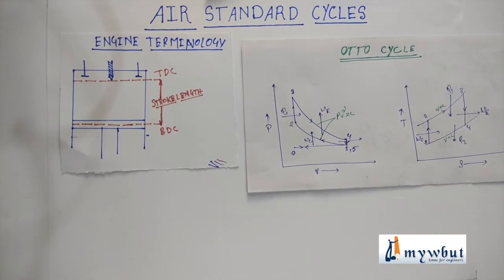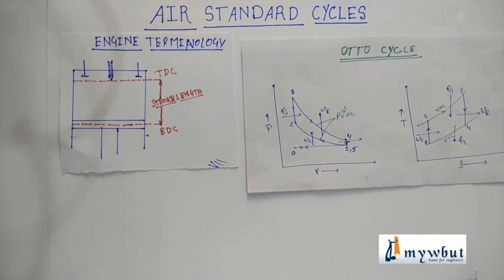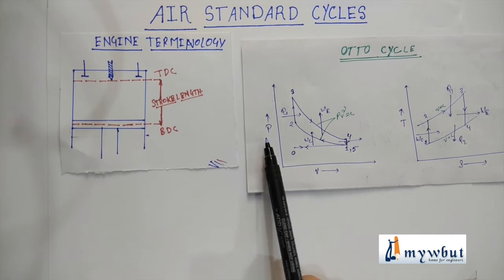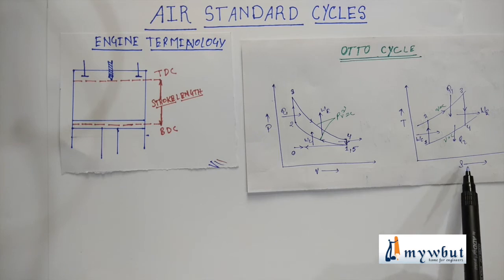After knowing the different kinds of engines and the engine terminologies, let us now see the two types of air standard cycles. Number one is the Otto cycle. Let us now understand the processes of an Otto cycle and the graphs — that is the PV diagram (pressure and volume diagram) and the TS diagram (temperature and entropy diagram).